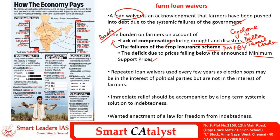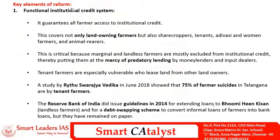Loan waivers, rather than being used as a tool to push farmers out of distress, are being used as a political tool. Government actions are taken considering their own political interest and not the interest of the farmer. Any problem warrants an immediate solution, and agri indebtedness also needs one — but this temporary solution should be backed by a long-term, permanent systemic solution. Instead of focusing only on symptoms, the government should focus on the causal factors.